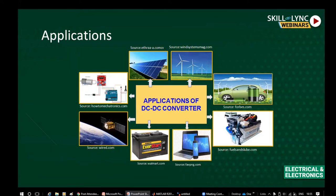In wind energy systems — standalone or grid-connected — energy can be stored in a battery using a DC-to-DC converter. Wind is also intermittent, but for charging a battery we need constant voltage or constant current. The DC-to-DC converter provides constant current for charging the battery, and the stored power can be used when wind is not available.